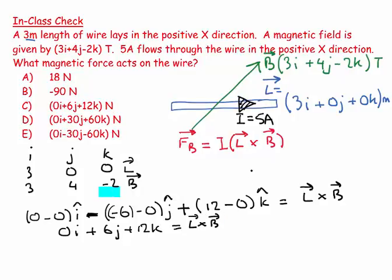But I want I L cross B, and so I look up here and see my current is 5 amps. So F, which equals I L cross B.